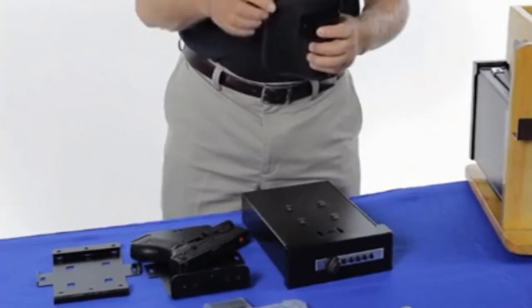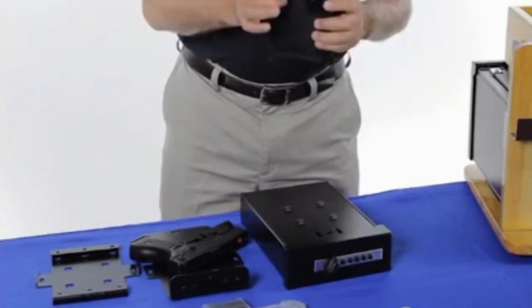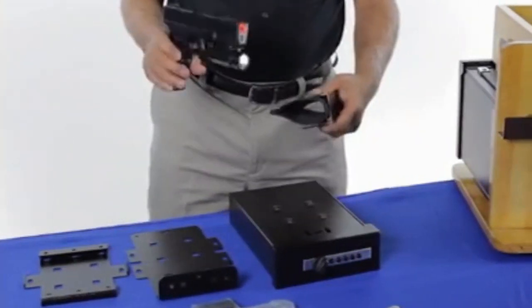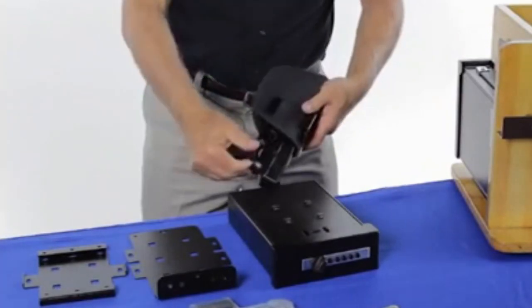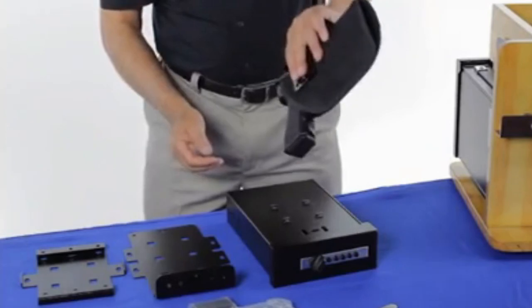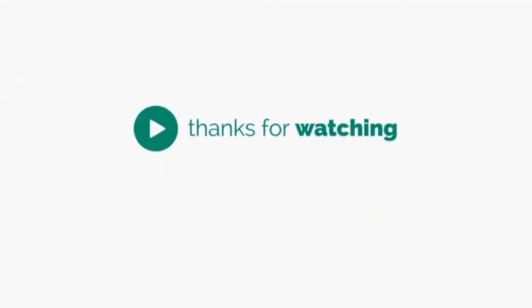For revolvers, you move the fastener to the bottom, and when guns have an attachment for a light, you just remove both fasteners. Slide the firearm in, and as you can see, it still has a tight hold on the gun.